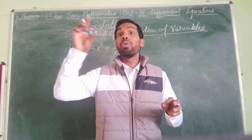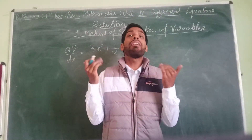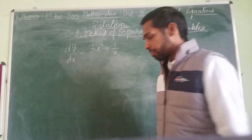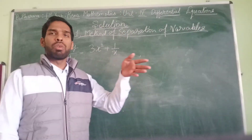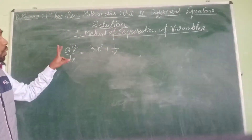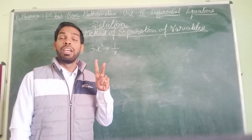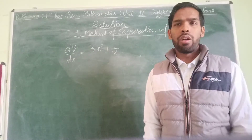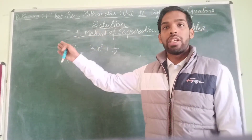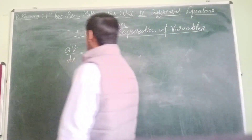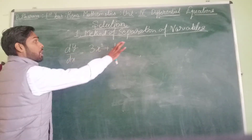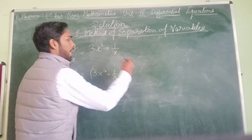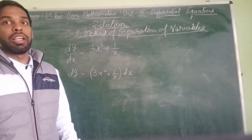The question is: find the general solution of dy/dx = 3x² + 1/x. In the method of separation of variables, two variables x and y must be separated to opposite sides. Here, cross-multiplying dx gives: dy = (3x² + 1/x) dx. Now the variables are separated — y terms on the left, x terms on the right.